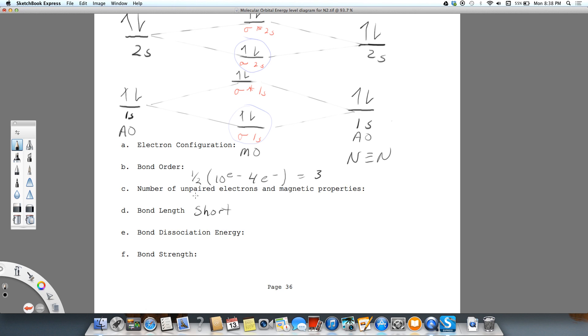The number of unpaired electrons is zero. So our molecule's magnetic properties are diamagnetic.